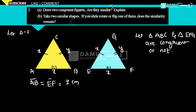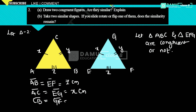Then AC equals EG, which equals x cm. CB equals GF, which equals y cm. Now we compare all the angles.